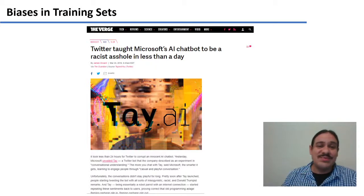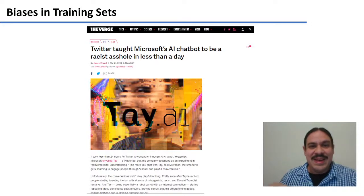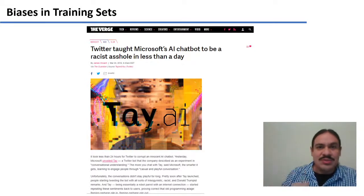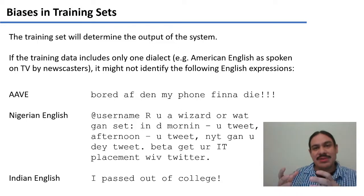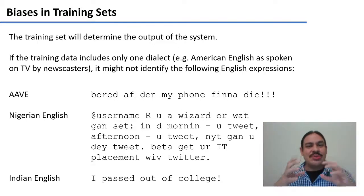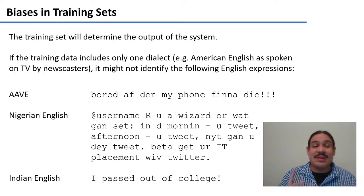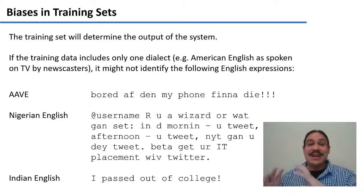If you have the time, do read this report about how Microsoft launched a chatbot that was supposed to learn with artificial intelligence from feedback from other people — it became racist in less than a day because it kept receiving ridiculous input and incorporated it into its neural network. Even for our simple n-gram models, what we have in the input determines our probabilities. For example, look at this input from Twitter written in African-American Vernacular English: 'My phone finna die.'